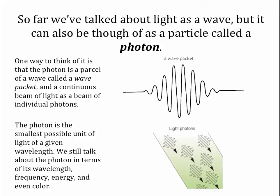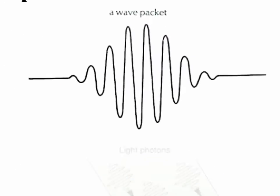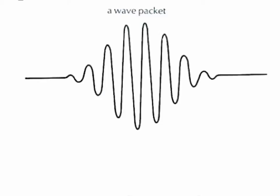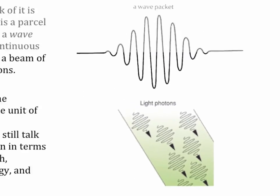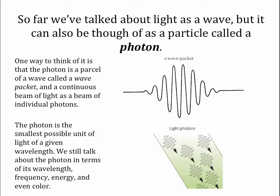We also need to discuss light further. Last week we talked about light having properties of a wave. Light also has properties of a particle — a small solid object like a bowling ball or a billiard ball. A photon is like a small packet of a wave, and a continuous light beam is a bunch of these packets, individual photons coming in together. A photon is the smallest possible unit of light — we can't subdivide a photon.